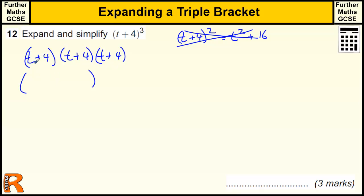Now, at this level you should be fairly familiar with multiplying out double brackets. But essentially what we've got to do is multiply each term in this bracket by each term in that bracket. So we've got t times t which is t squared, t times 4 which is 4t, 4 times t is 4t, and 4 times 4 is 16.